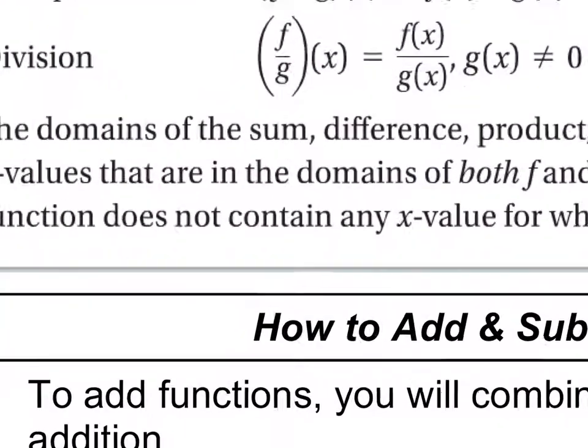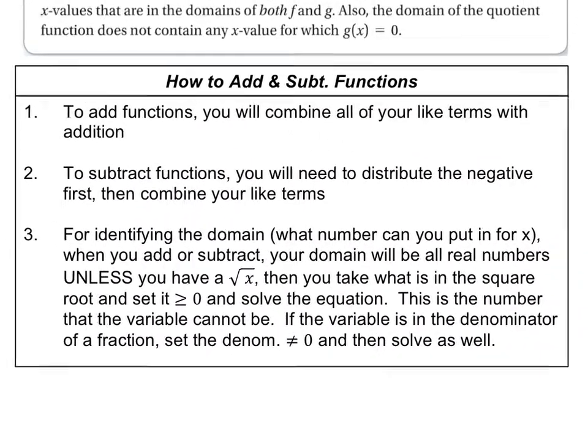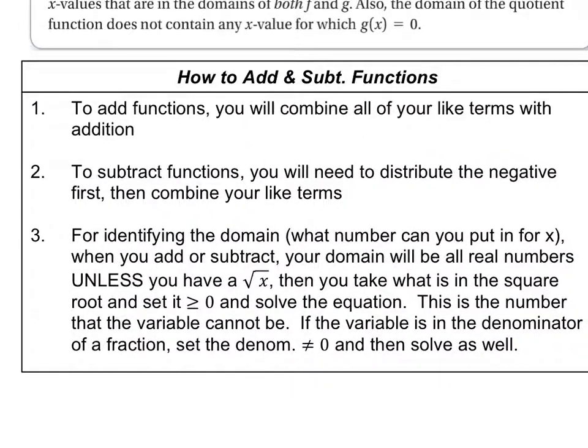Alright, so how to add or subtract functions. There's kind of a list of three steps here. And as a matter of fact, I'm going to even start off, we're not even going to mess with the third step in identifying the domain. All we're going to do is add and subtract these guys. So when you add, to add functions, you simply combine all your like terms with addition. So you find the things that are the same, combine those together, and you're done. Subtraction, to subtract functions, you need to distribute the negative first, and then we combine our like terms. So in subtraction, you've got to distribute the negative first, then combine like.